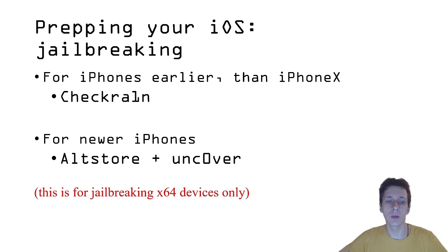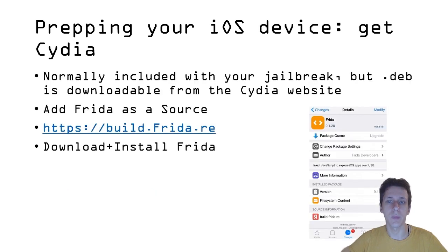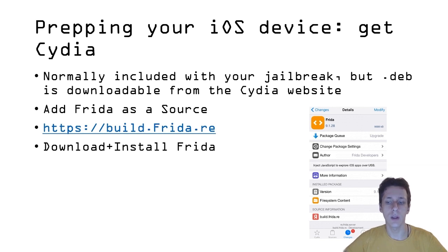For newer iPhones you will have to use AltStore and Unc0ver. Note that AltStore and Unc0ver only work for jailbreaking 64-bit devices. The second step is to get Cydia — normally it is included with the jailbreak, but the Debian package is downloadable from the Cydia website and installable via SSH if you don't have it. After downloading, you add Frida as a source in Cydia's sources and install Frida directly from Cydia.